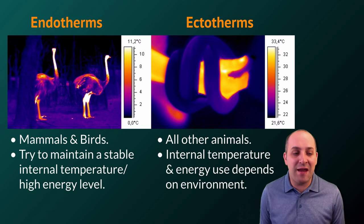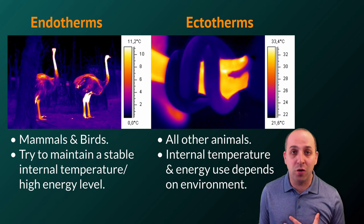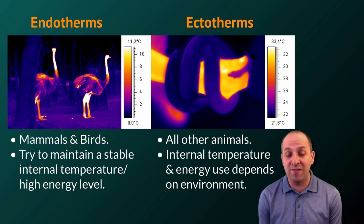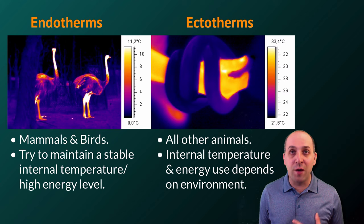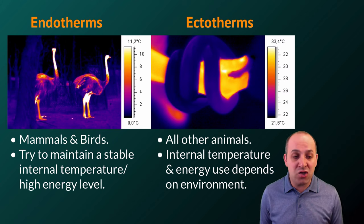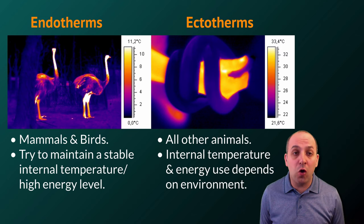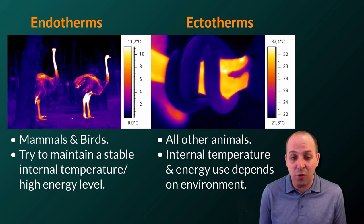Endotherms need to maintain a stable internal temperature. Ectotherms don't. The internal temperature of an ectotherm is almost entirely dependent upon the temperature of its environment. Since endotherms are maintaining their internal temperature within that acceptable range, they can engage in activities that require greater energy for longer periods of time in their environment than ectotherms can.